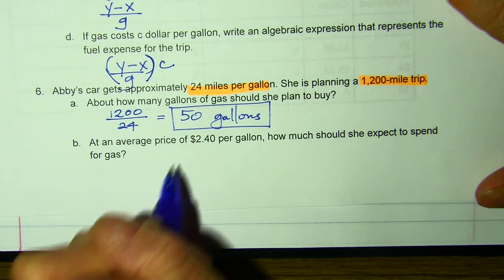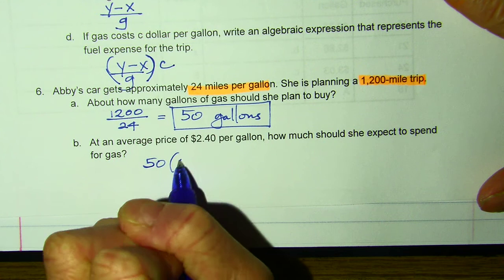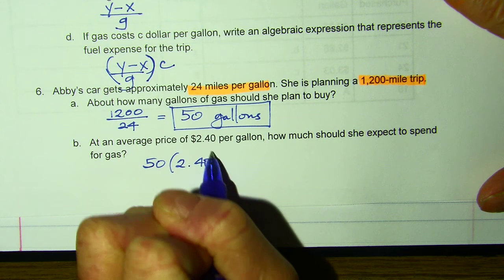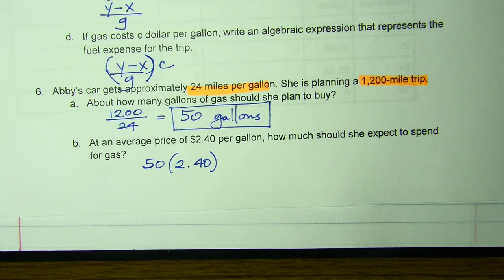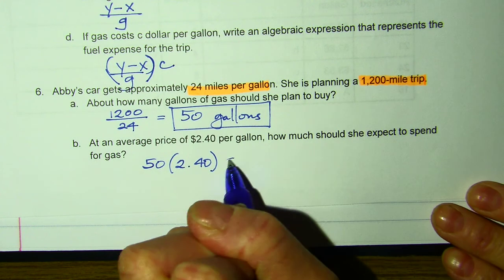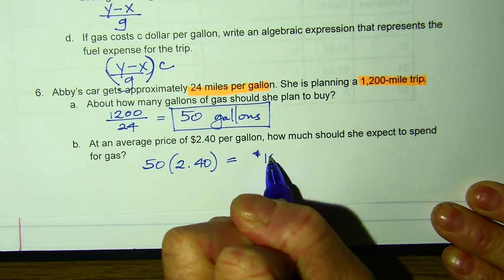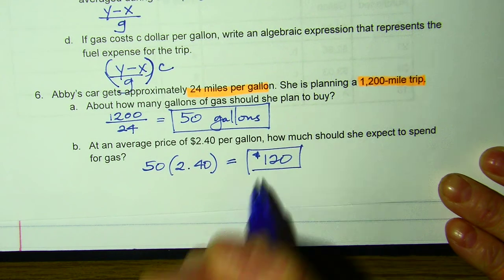Here's the average price. So if I have to purchase 50 gallons, I would multiply that by the cost. My tank takes about 13 to 14 gallons, and then I would multiply that by how much a gas station is charging. So 50 times 2.40, it's going to cost her $120 to spend on gas.